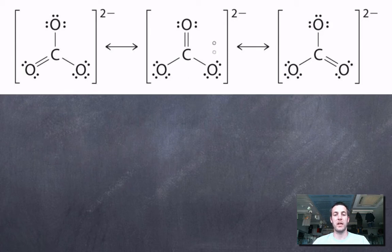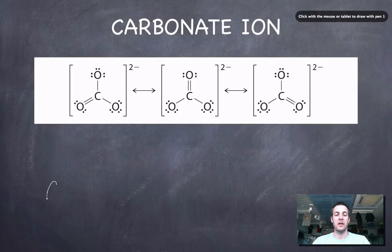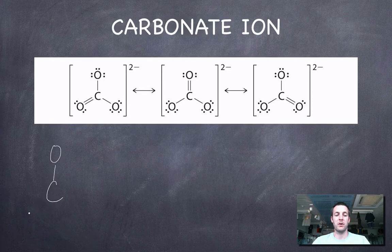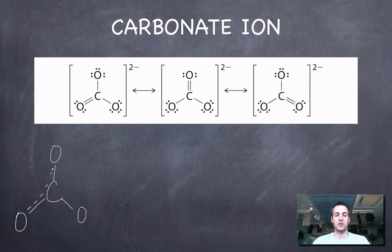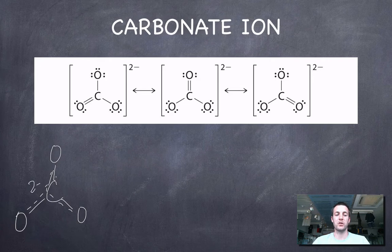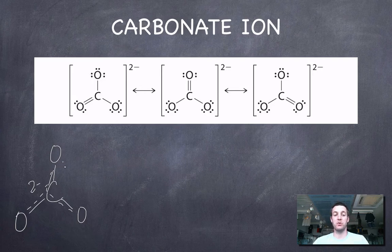Now we can think about what the average of all those is, and instead of having two bonds and one bond each then all the carbon-oxygen bonds would be one and a third bonds. So we'd have the electrons delocalized over the entire molecule and there'd be a two minus charge here. So that shows us how the electrons are able to move around or to delocalize in this molecule.